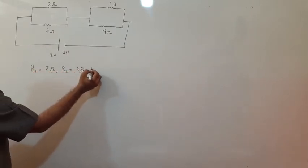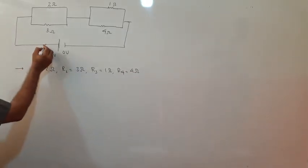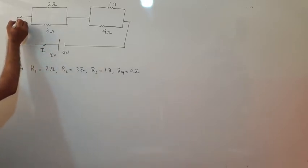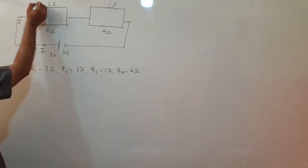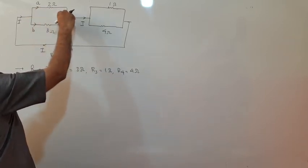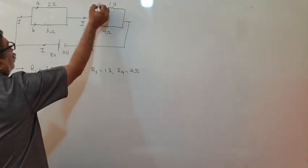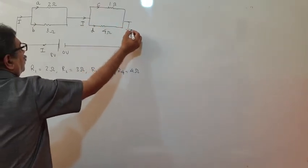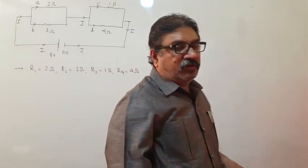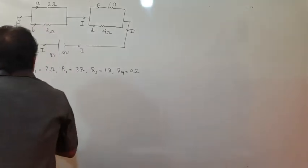We have got this type of arrangement: a system of two parallel resistances — this is 2 ohm and this is 3 ohm. Then another pair: this is 1 ohm and this is 4 ohm. And over here we are having an 8 volt battery. So we call these R1, R2, R3, and R4. R1 is 2 ohm, R2 is 3 ohm, R3 is 1 ohm, and R4 is 4 ohm.